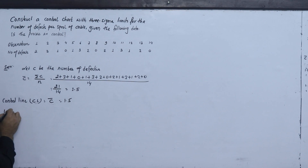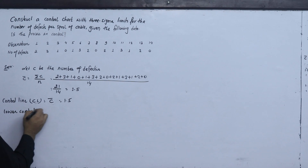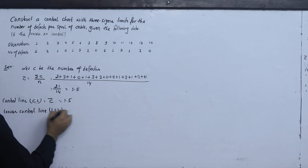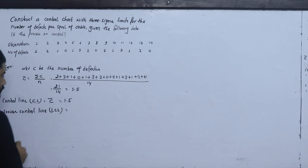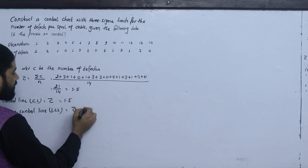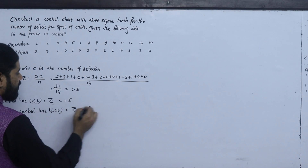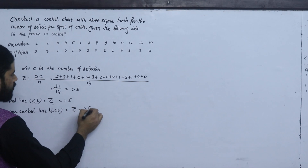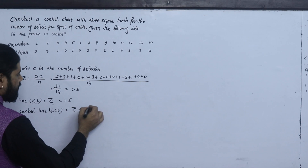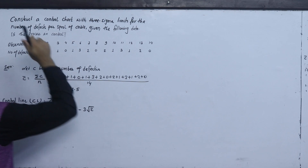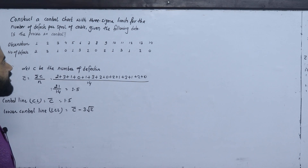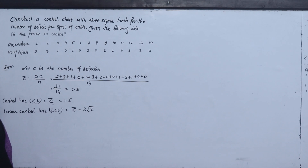The lower control line LCL for number of defectives is c-bar minus 3 times the square root of c-bar. Construct a control chart with 3-sigma limits for the number of defects.